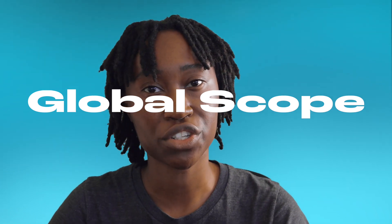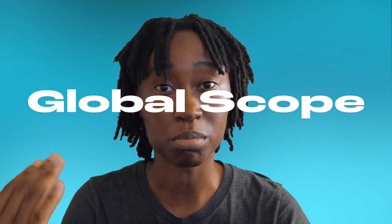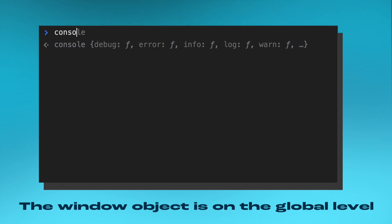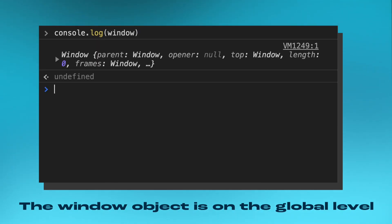At a high level, there are two scopes I want to focus on for this video. The first is the global scope, which is the very top level of your application. In theory, any function or variable has access to your global scope. So if you're running JavaScript inside your browser, the global scope is considered to be the page that you're running all of your JavaScript code inside of — all the files, all the functions you create have access to that global scope.